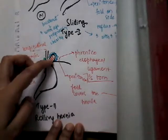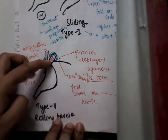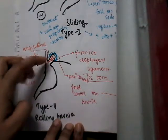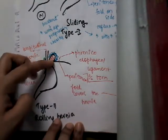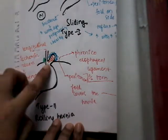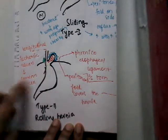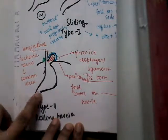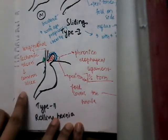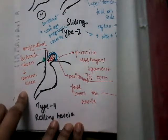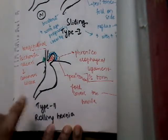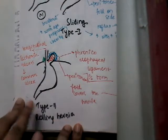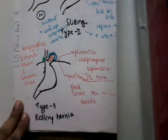Over time in rolling hiatus hernia, longitudinal ulcers form in the herniated segment. These ulcers are called Cameron's ulcers, which is an important clinical point to remember.